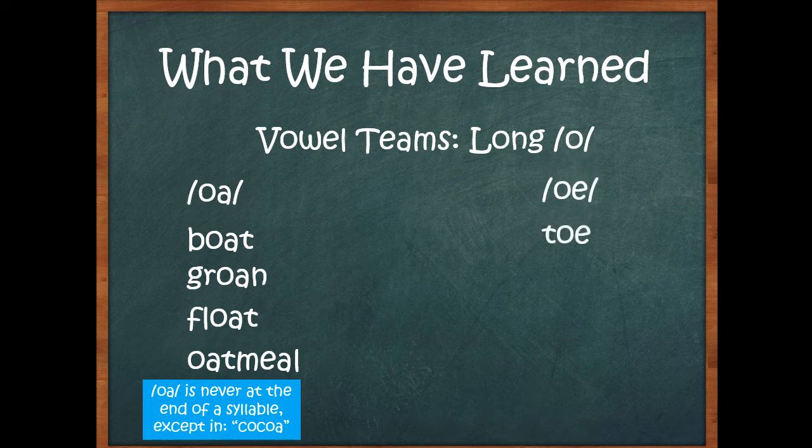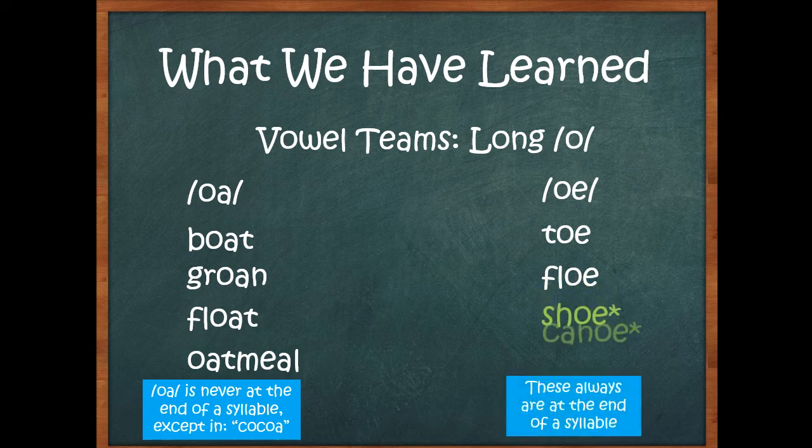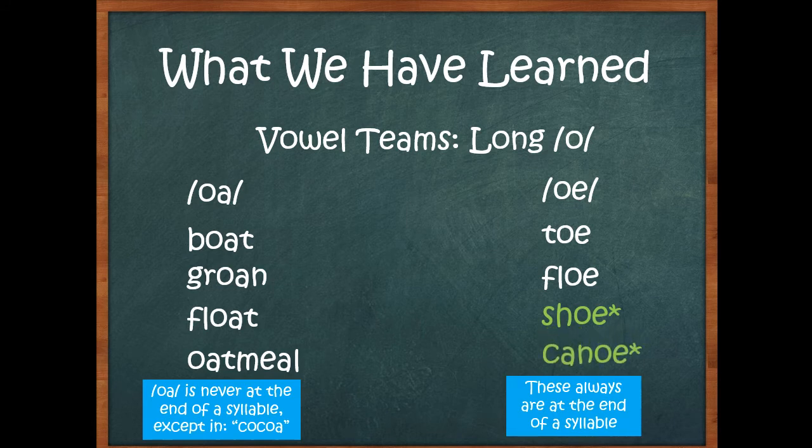We saw OE, another way of making the O sound, like in toe and flow. And remember, ice floe is when there's a lot of ice moving on the water. But unfortunately, OE doesn't always make the O sound, like in shoe and canoe. We don't say show and canoe. And these are always at the end of the syllable.